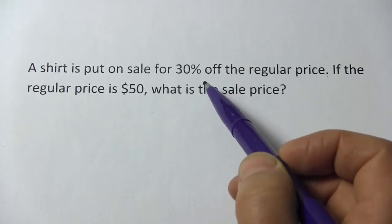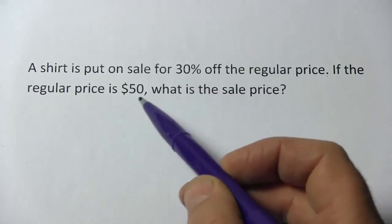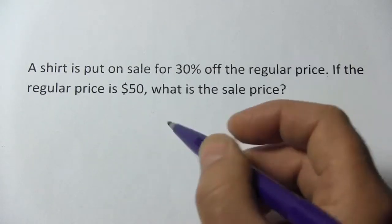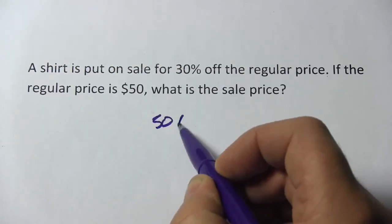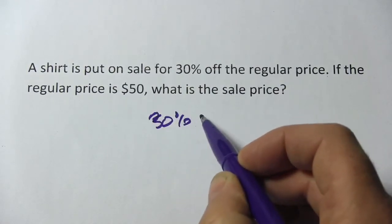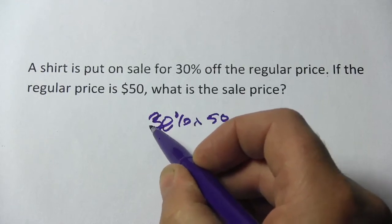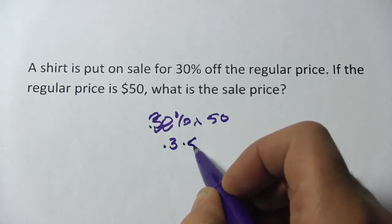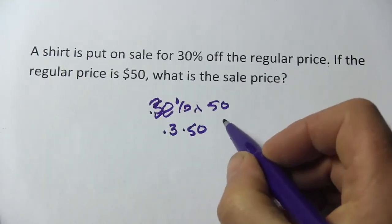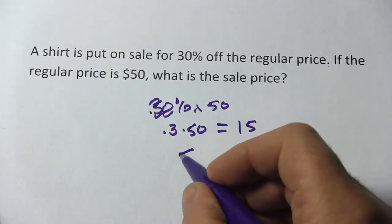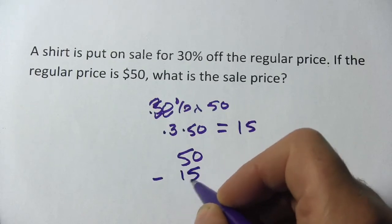When they say 30% off, you need to figure out what 30% of 50 is and subtract that from the original price. So 30% of 50 is 30% times 50, we'll convert this to a decimal, .3 times 50 is 15. So that is what we're going to subtract. That's the discount, so 50 minus 15, and that equals $35.